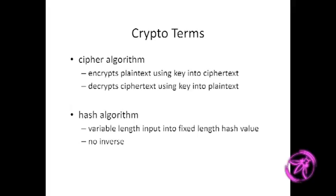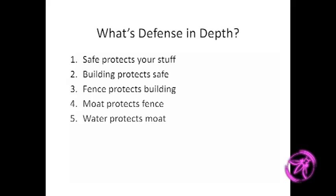A hash algorithm is distinctly different from a cipher. A cryptographically secure hash takes a variable-length input and produces a fixed-length output. The cryptographic part is that there's no inverse — you can't go the other direction, and that's cryptographically enforced by the mathematics. Ideally it can't even be brute-forced; it should be computationally infeasible to do so.